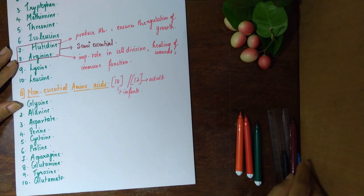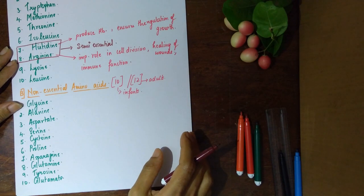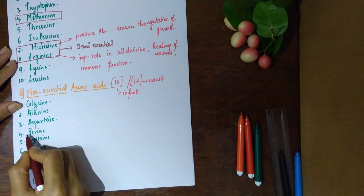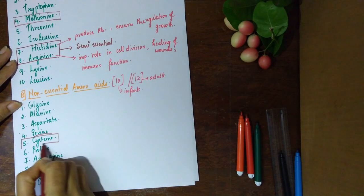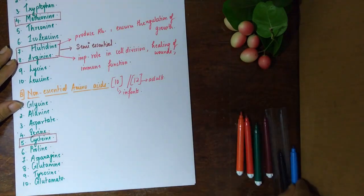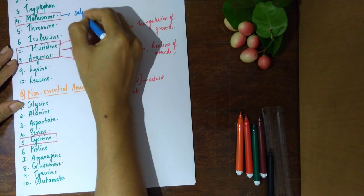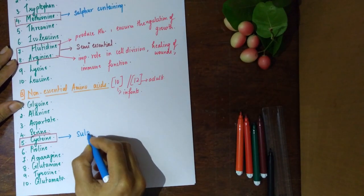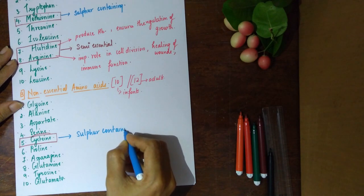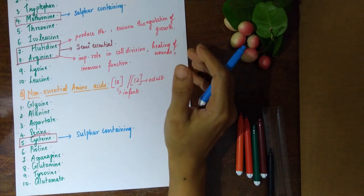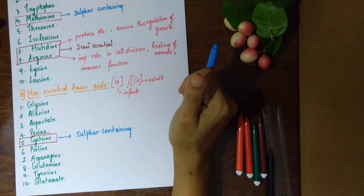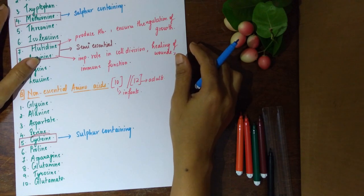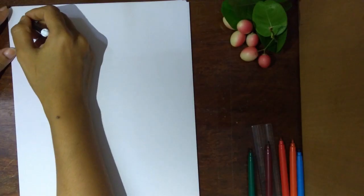One important thing to look out for in the essential and non-essential lists: methionine (essential) and cysteine (non-essential) are both sulfur-containing amino acids. So if you have any disulfide bonds or proteins which contain sulfur, they are typically going to have methionine as well as cysteine as their component amino acids.